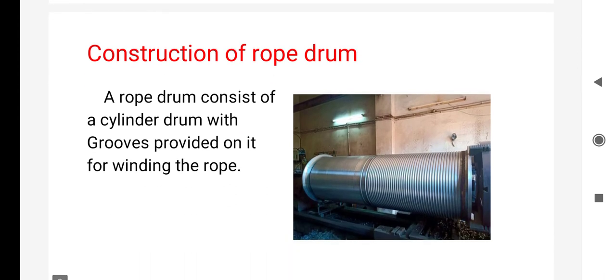See, this is the figure of a drum. In this figure, you can see the grooves and the cylinder on which grooves are made. The actual definition of a rope drum is a cylindrical drum with grooves provided for winding the rope.